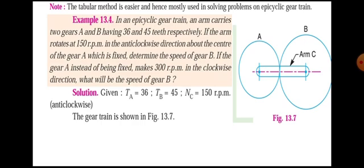Let us see the problem. In an epicyclic gear train, the arm carries two gears A and B having 36 and 45 teeth respectively. If the arm rotates at 150 RPM in the anti-clockwise direction about the center of gear A, which is fixed, determine the speed of gear B. If gear A instead of being fixed makes 300 RPM in the clockwise direction, what will be the speed of gear B?